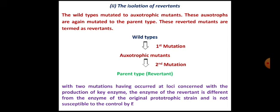This modified enzyme is not susceptible to control by the normal control metabolite. As we have seen in the diagram of the unbranched pathway where A gets converted to E, the end products or the enzymes do not recognize the presence of inhibitors or repressors. This is the general principle of generation of revertent mutants and how it is possible to overproduce microbial metabolites.